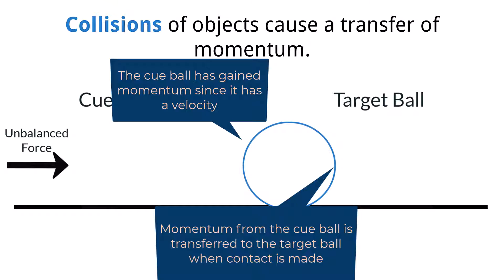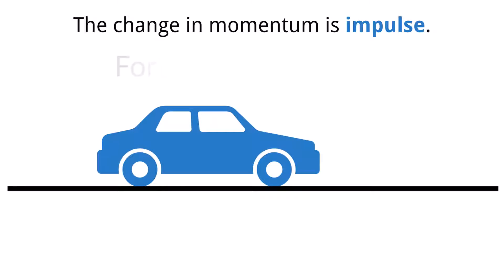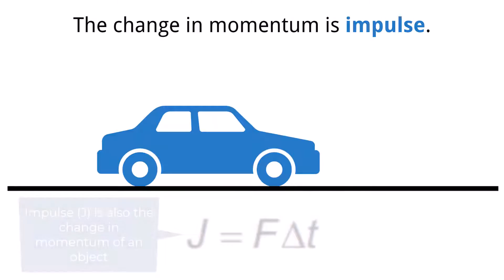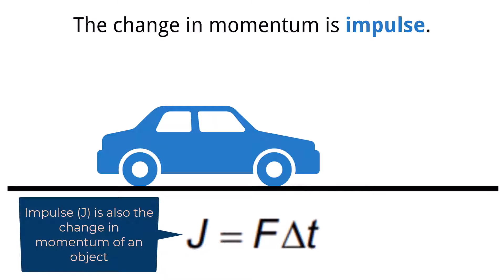A large amount of momentum will cause a large transfer of momentum to the target ball. The collision between objects can be interpreted as either a change in momentum or as an effect of forces between two objects. To show the link between these ideas, the quantity of impulse is important to be aware of. Impulse is the product of force and time and is the change in momentum.